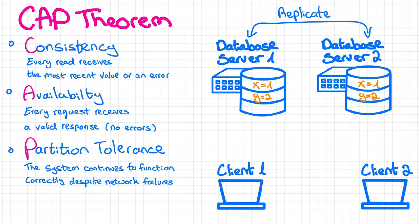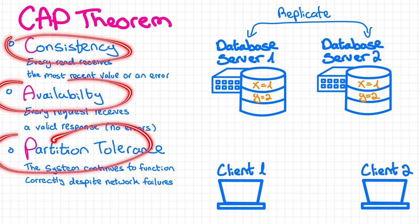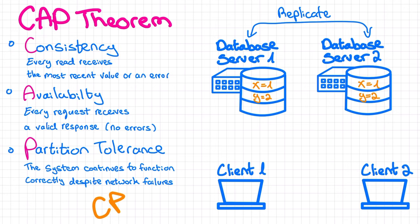According to the CAP theorem, a distributed system can only deliver two of these three properties. A system can be CP, which means it delivers consistency and partition tolerance, while sacrificing to some extent its availability.